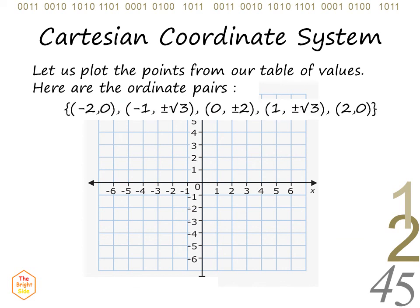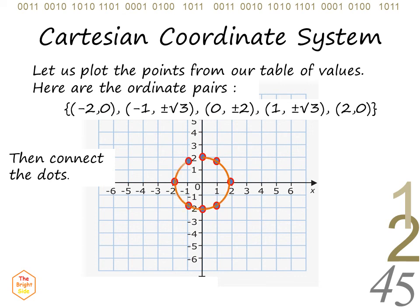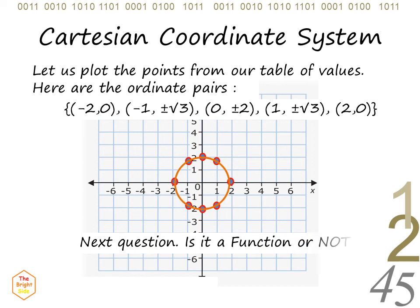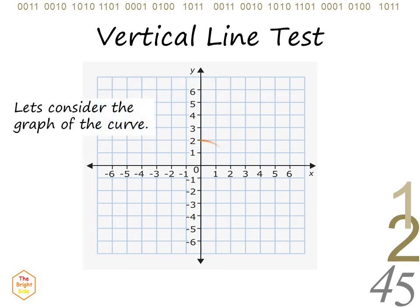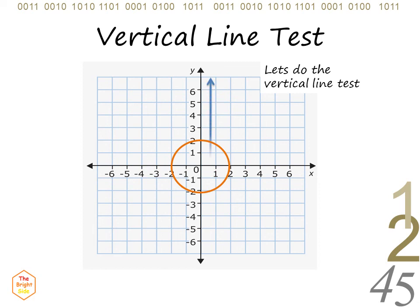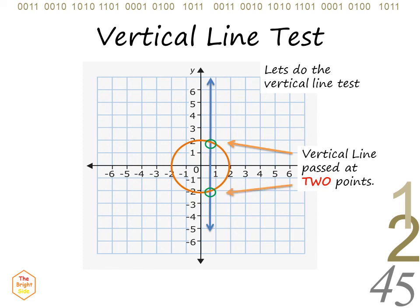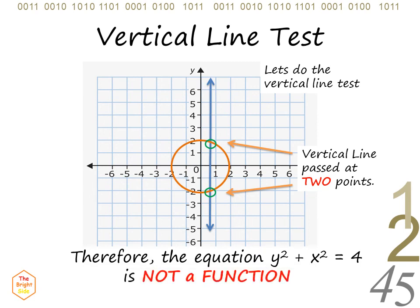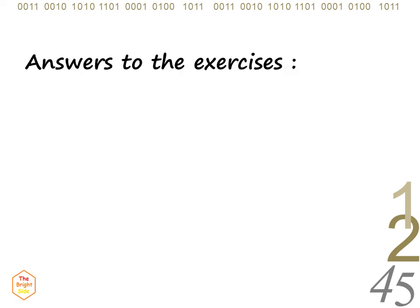Now, let us plot the points of the ordered pairs from our table of values. To determine if this is a function or not, we can use the vertical line test. Notice that the vertical line passed the given curve at two different points. Since there are two points of intersection, equation number 3 is not a function. Here are the answers to the exercises.